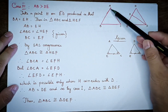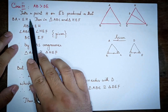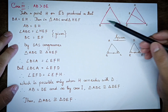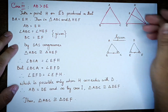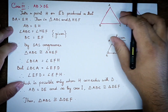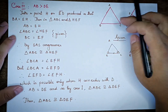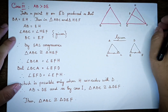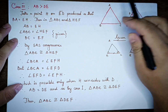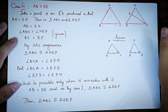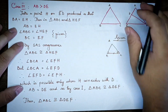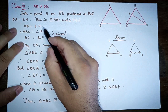If AB and DE are not available as equal, take a point H on AB such that BH equals DE. Then EH equals AB by the construction.